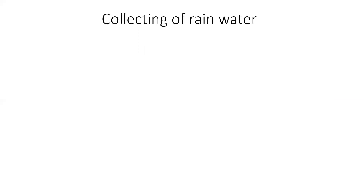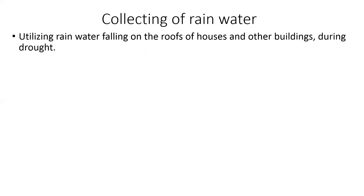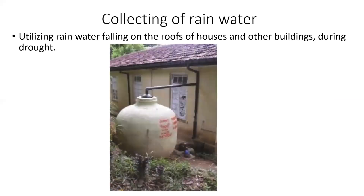Collecting rainwater: utilizing rainwater falling on the roofs of houses and other buildings during drought. You can all implement this system easily.